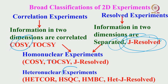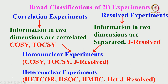Both correlation and resolved experiments can be homonuclear or heteronuclear type. You can have homonuclear correlation, homonuclear resolved, heteronuclear resolved, and heteronuclear correlation experiments — all are possible. Each 2D experiment is given an acronym when designed. For example, COSY, TOCSY, J-resolved, etc. Similarly, heteronuclear experiments are called HETCOR, HSQC, HMBC, etc. Some of these we will discuss in the next few classes.